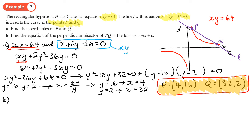We can move on to part b. It says find the equation of the perpendicular bisector of PQ in the form y equals mx plus c. So the first thing you want to do is to find the midpoint of PQ. We're going to do that by adding together the x coordinates and dividing by two, so that'd be 4 plus 32 over 2, and the y coordinate 16 plus 2 over 2. So that would give me a midpoint of 36 divided by 2, which is 18, and 18 divided by 2, which is 9.